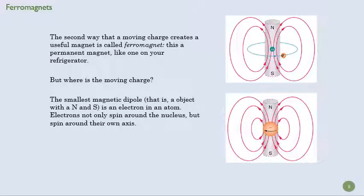And the moving charge here is on the atomic level. So the smallest magnetic dipole, that is the smallest magnet, is an electron in an atom. Electrons actually are dipoles themselves, and they're spinning around the nucleus, and they are spinning around their own axis. And so there are charges that are moving. They're going to create a magnetic field.